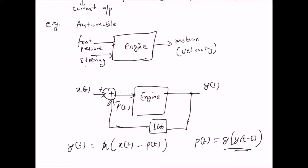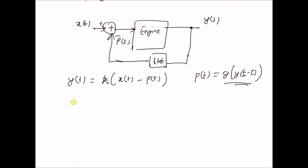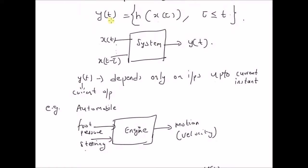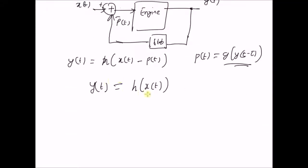Next, all the systems that do not have any memory — that is, the systems that do not depend on previous inputs — are also causal systems. That is, the systems where y is a transformation of the current input x(t). Comparing with the definition of a causal system where y(t) = h(x(τ)) and τ ≤ t, for a memoryless system τ becomes equal to t. Therefore, this is a memoryless system and it is also causal because it only depends on the current input.